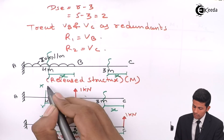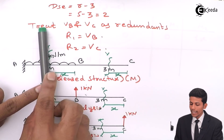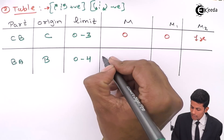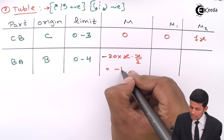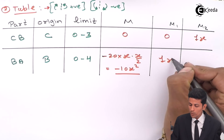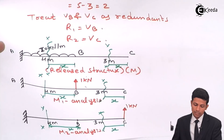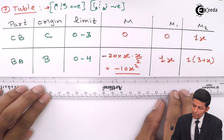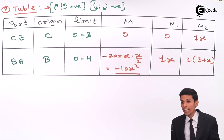For part BA: origin at B, limit 0 to 4. Taking a section at distance x, the loads on the right side include the UDL: M = −20·x·(x/2) = −10x². In M1 there is only 1 kN at B, so M1 = 1·x (positive). In M2 we take the section — the 1 kN load at C is at distance (3 + x), so M2 = 1·(3 + x). We have now completed the table.